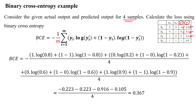The binary cross-entropy formula is: minus 1 by m, into the summation from i equal to 1 to m of actual output into log of predicted output, plus 1 minus actual output into log of 1 minus predicted output. To calculate binary cross-entropy, we substitute the actual and predicted output values for each sample. Since the number of samples is 4, we use m equal to 4 in the denominator.